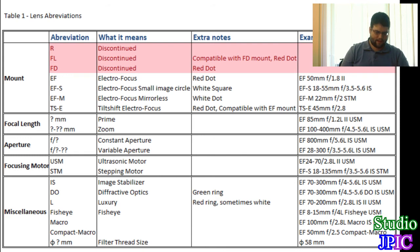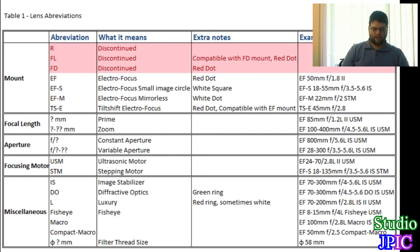Then you have the STM, or stepping motor — a new series of lenses that Canon introduced with the Rebel T4i. These offer smoother focusing, though not quite as fast as the USM based on initial tests. But it's much smoother, so you can autofocus during video recording.